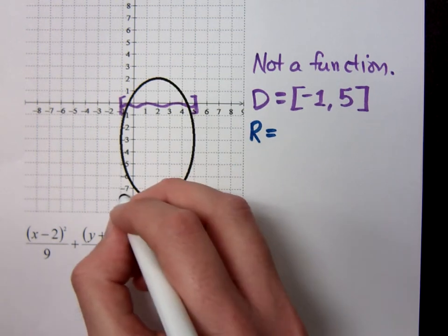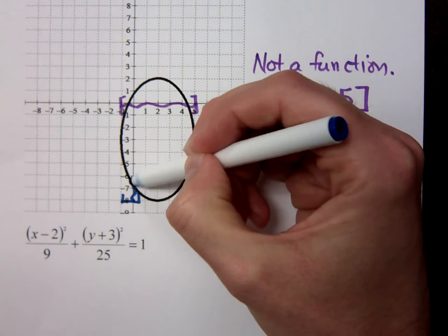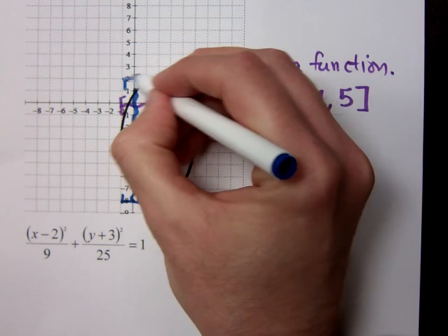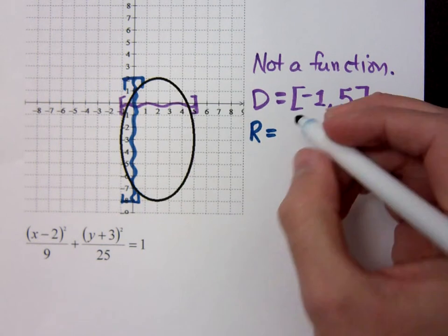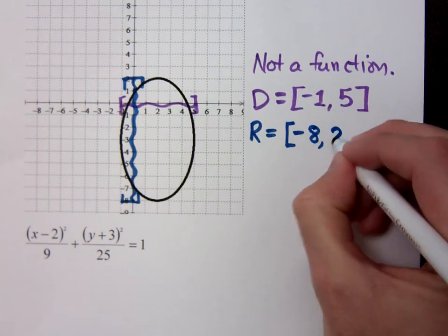Negative 8. The lowest he gets is negative 8. And he gets all the way up to what? He gets all the way up to 2. So then my interval notation is from negative 8 to positive 2.